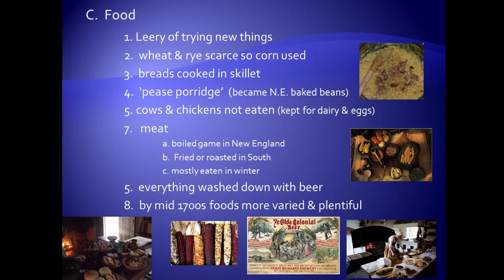For breads, they used corn. Breads were cooked in skillets over the fire in the fireplace. One very common item of sustenance in New England was peas porridge — a mixture of beans and peas cooked together into a kind of mush. The top photograph on the right is an image of peas porridge. What evolved out of that would be the very New England dish of baked beans, where they revised and improved on the recipe.